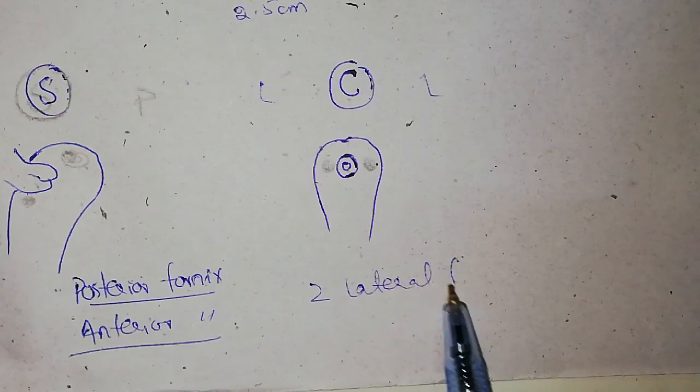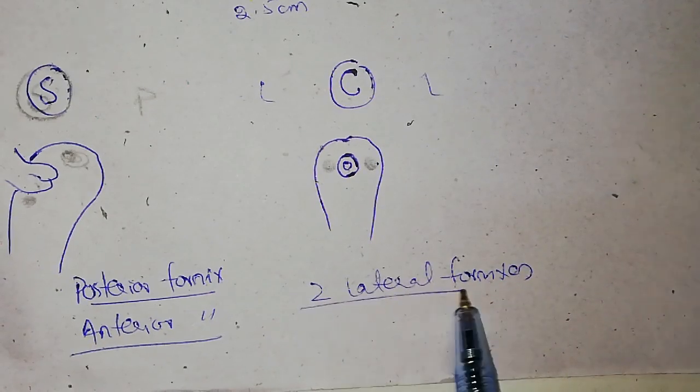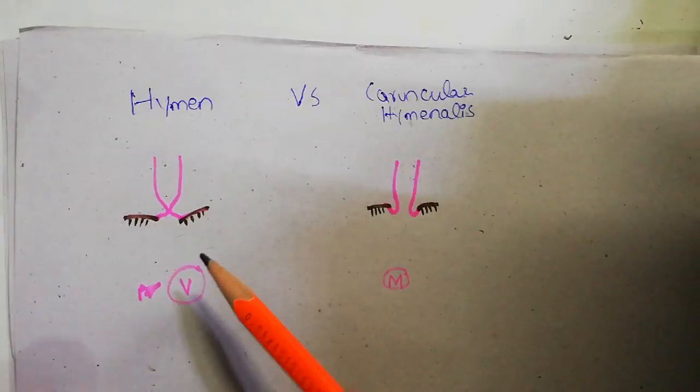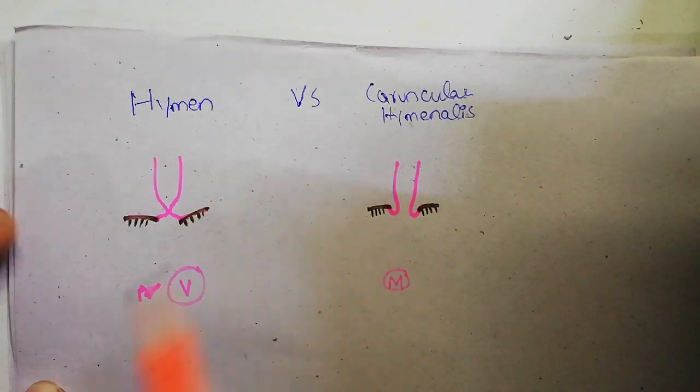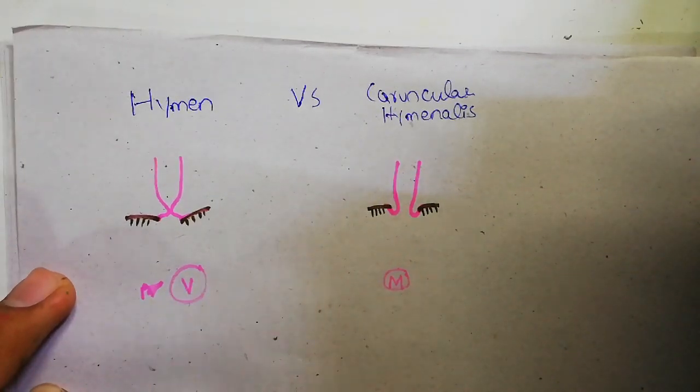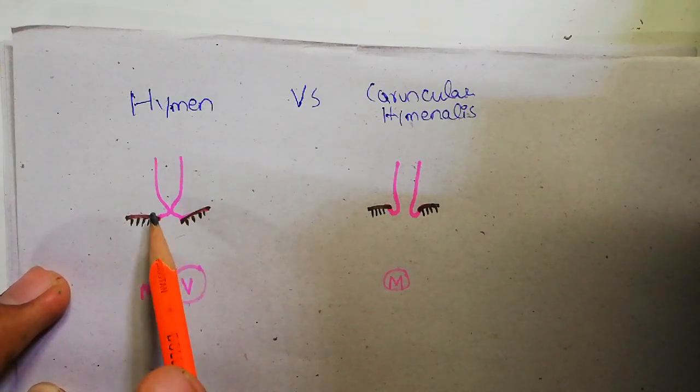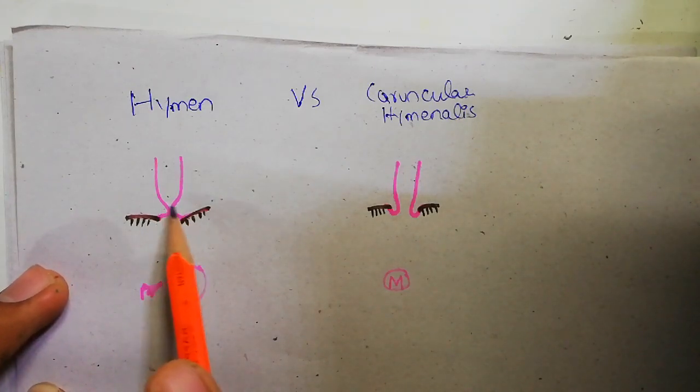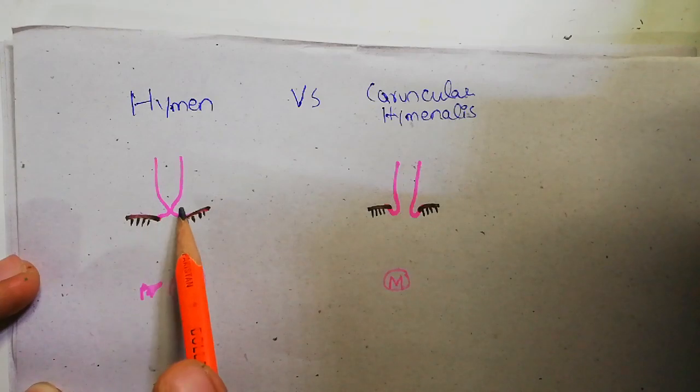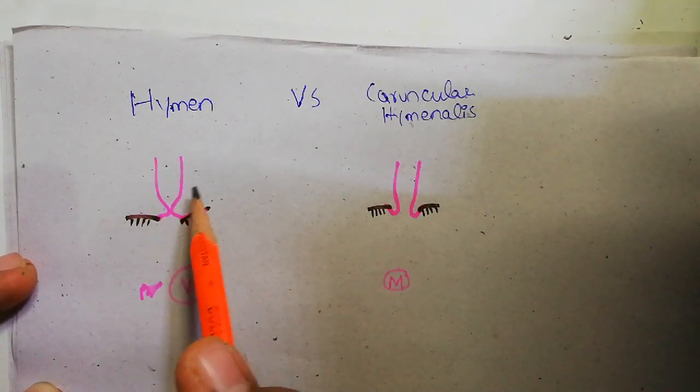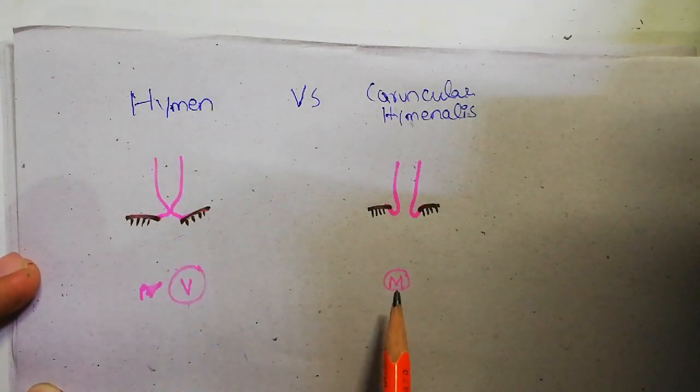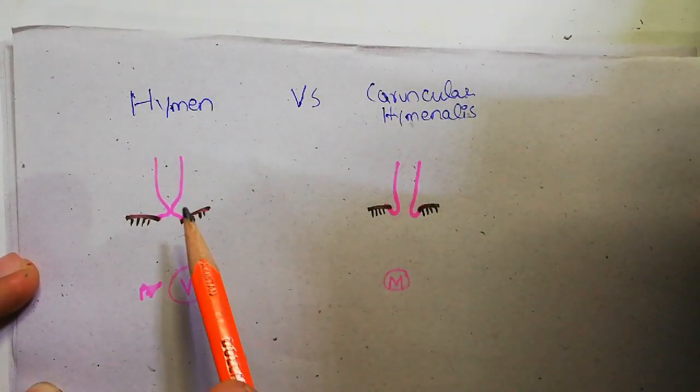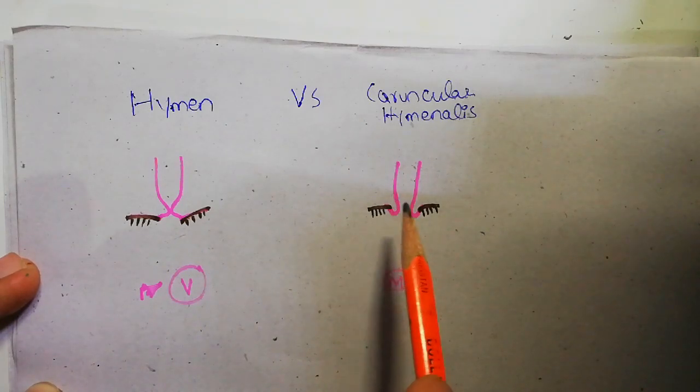So what is the difference between hymen and caruncular hymenalis? In virgin females, the external vaginal orifice is closed by two mucosal folds. These two mucosal folds close the lumen and these folds are called hymen.